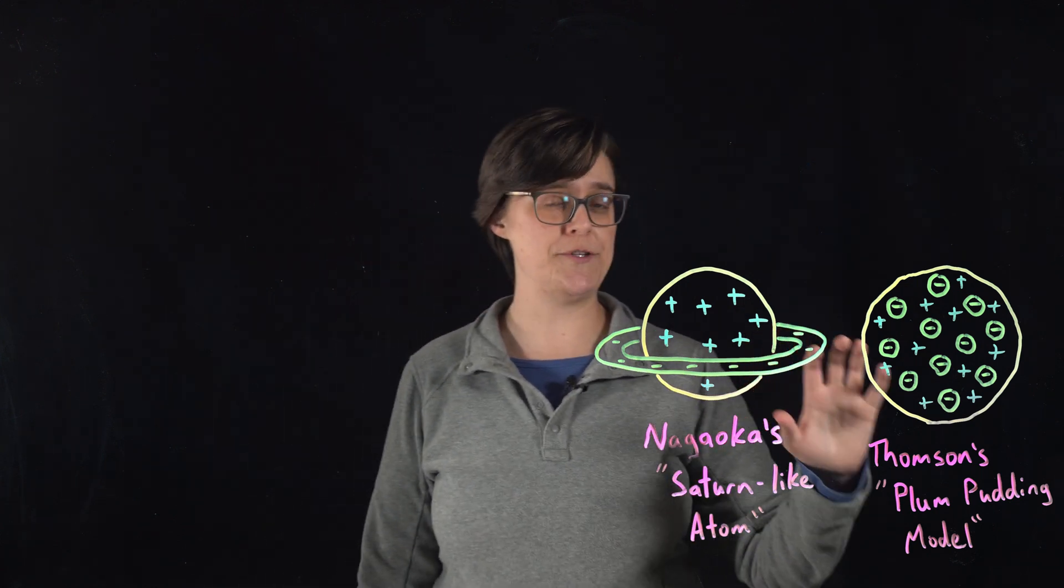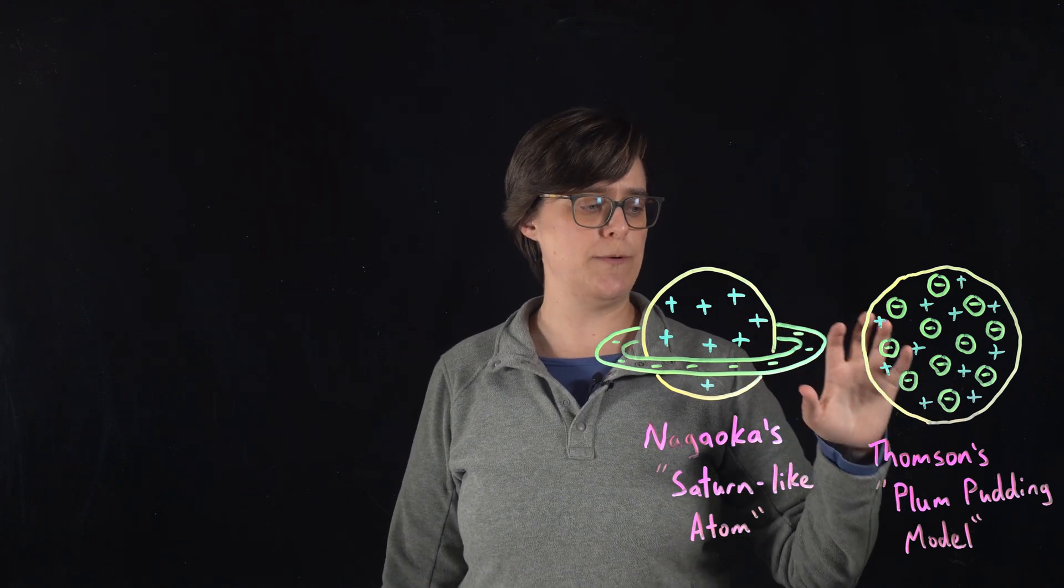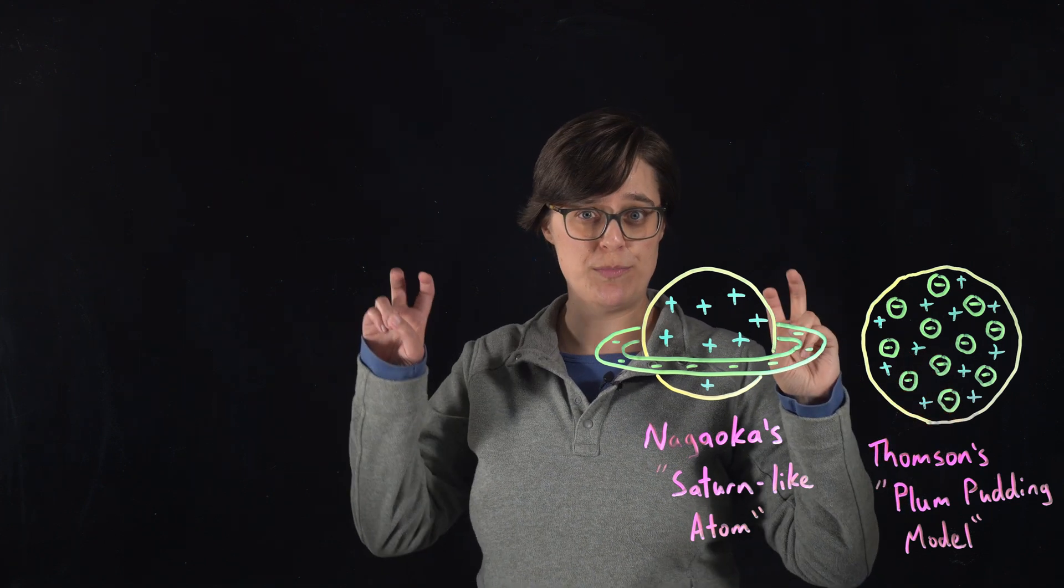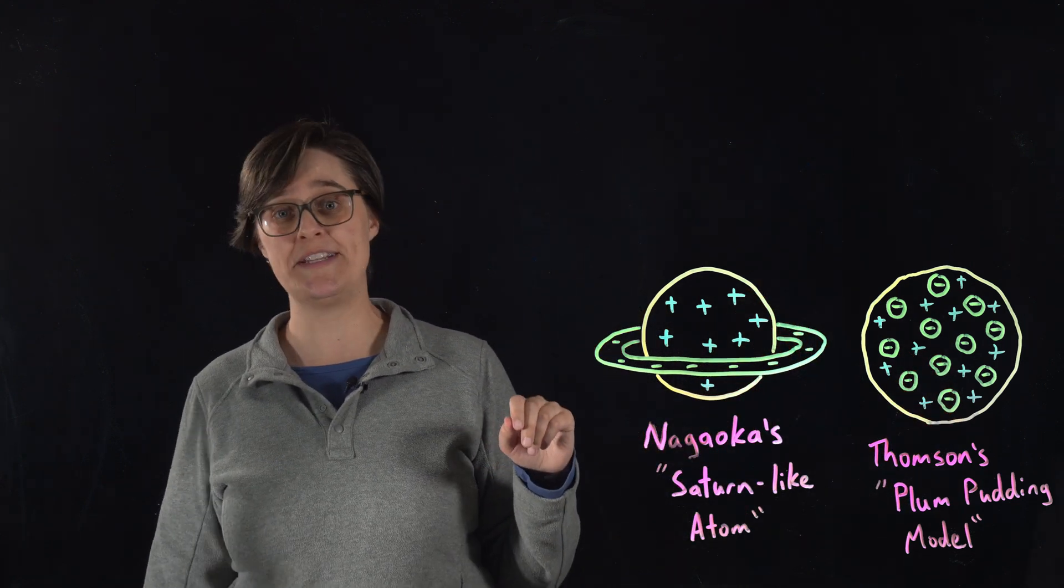And we have J.J. Thompson's plum pudding model, in which negatively charged electrons are embedded in positively charged pudding, like raisins in a disgusting cake.